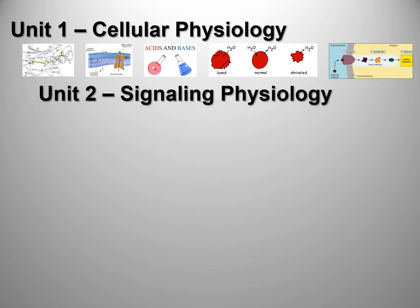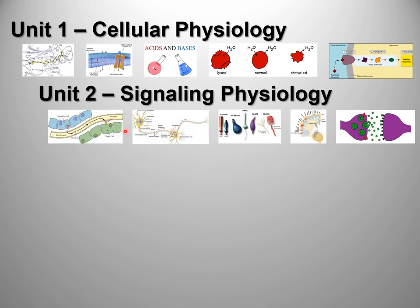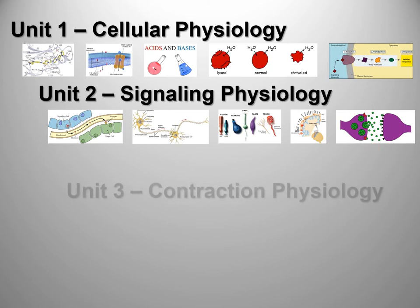That signaling becomes the segue for signaling physiology, which is endocrinology, neurons, and senses. Later on we're going to get into the sympathetic and parasympathetic systems, which is a major source of adverse symptoms and signs in people. So we want to work on that a little bit and get you guys a head start in that direction.